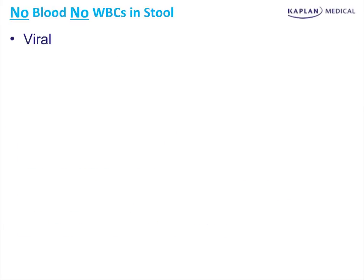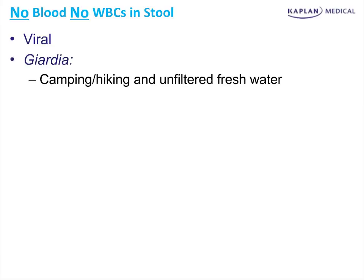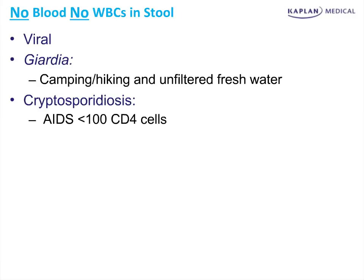How do we diagnose the etiology of diarrhea when there's no blood and no white cells in the stool? It could be viral or it could be Giardia. For Giardia, look for a person who's been camping or hiking in unfiltered fresh water. Cryptosporidiosis is almost exclusively in HIV — it's an opportunistic infection in very advanced HIV — and the test is a modified acid-fast stain. The most common wrong answer is expecting to see it on the ova and parasite exam; you cannot.